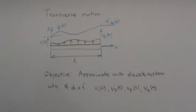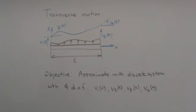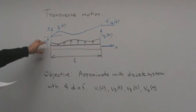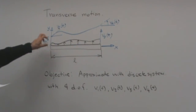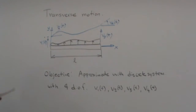We derived already the mass and stiffness matrices of a beam when we consider only axial displacements, where only the left and right ends deflect in the direction of the beam. Now we are going to consider bending, and derive the elements of the stiffness matrix that correspond to the degrees of freedom for translation, lateral motion, and also rotation of the left end and the right end.